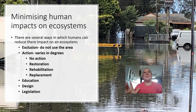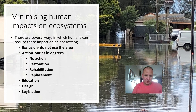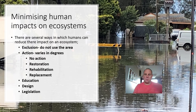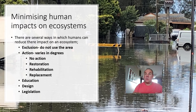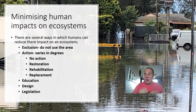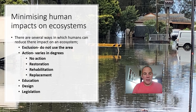What we're really trying to do is look at how humans can minimise the impact on ecosystems. There are several ways: exclusion — don't use the area at all; action, which can vary in degrees (no action is itself a form of action, like the Central Coast Council and the entrance channel); restoration — restore it back to how it was; rehabilitation — such as extra planting of plants to secure an eroded riverbank; replacement — putting something new in; education — getting people to learn about ecosystems; designing ecosystems; and legislation — having laws that protect ecosystems at risk.